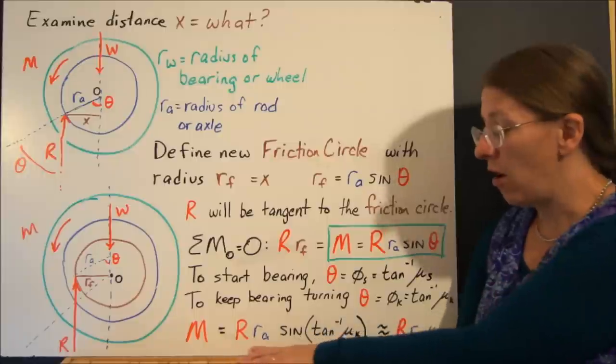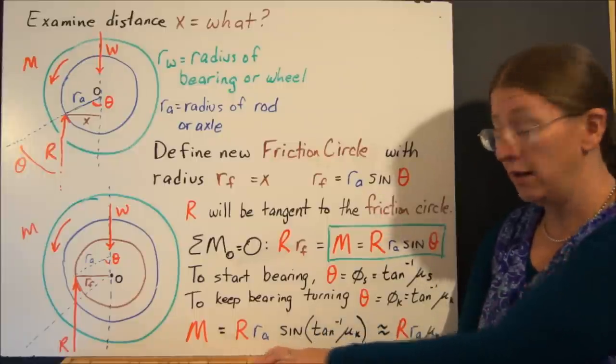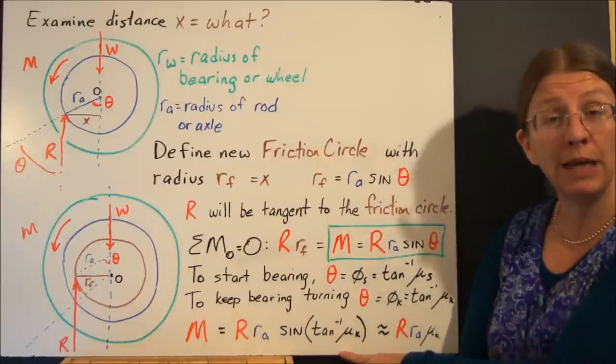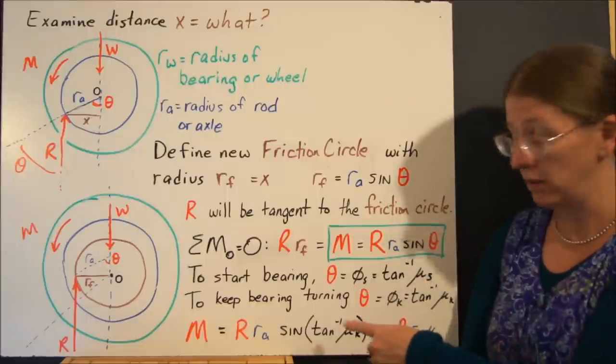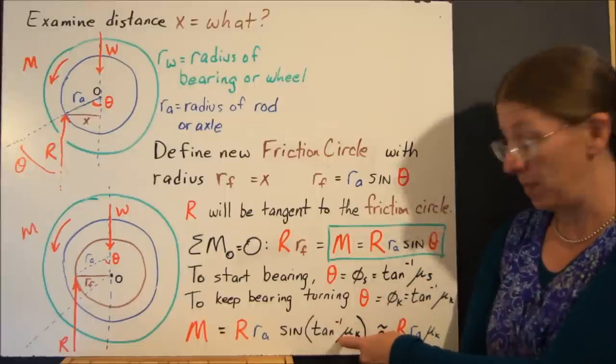So if I plug that all in, I've got R, M equals R times Ra, sine of the inverse tangent of mu k. That's to keep it moving. That's what I had on my first one. To keep it moving, this is what my moment needs to be.